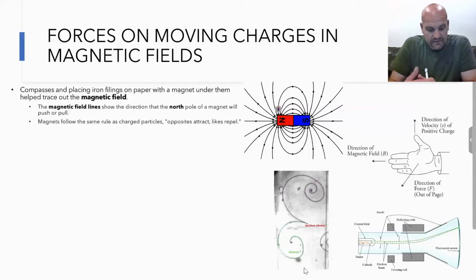Let's talk about what is a magnetic field. You may remember from middle school or elementary school, you used to take iron filings, dump them on paper with a magnet underneath, and see the iron filings trace out the field lines. The magnetic field lines show the direction that the north pole of the magnet will push or pull. Magnets follow the rules of opposites attract and likes repel, and the lines move from north to south.